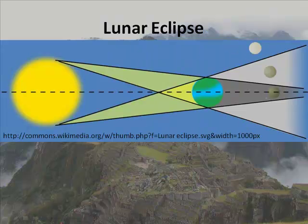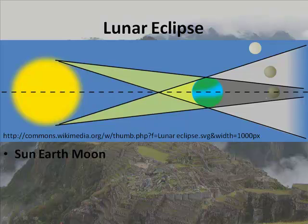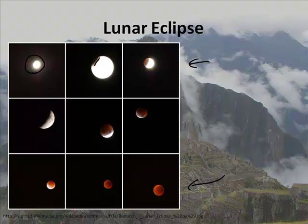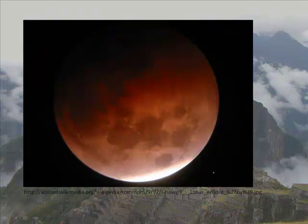We also have lunar eclipses. In the lunar eclipse, you have the Sun, followed by the Earth, followed by the Moon. So the Earth is in the way of the Moon seeing the Sun. You get some really cool pictures — here is the Moon, and then here comes the Earth in its way. As time goes on, through time-lapse photography, it eventually turns this blood red color. That's pretty cool — very cool, actually.